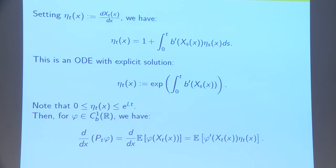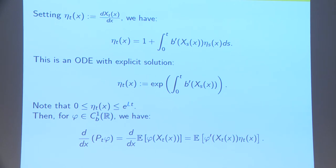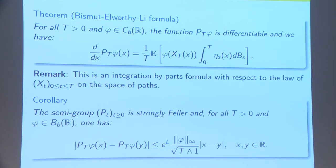This gives us boundedness of the derivative η. So, what we can say is that for φ, which is C^1 bounded by the dominated convergence theorem, the derivative of the semi-group P_T φ is given by this formula here. But, the problem here is that we have a derivative here, and we would like to get rid of the derivative, because we want a strong Feller property. The way of getting rid of this derivative is by using the integration by parts formula.